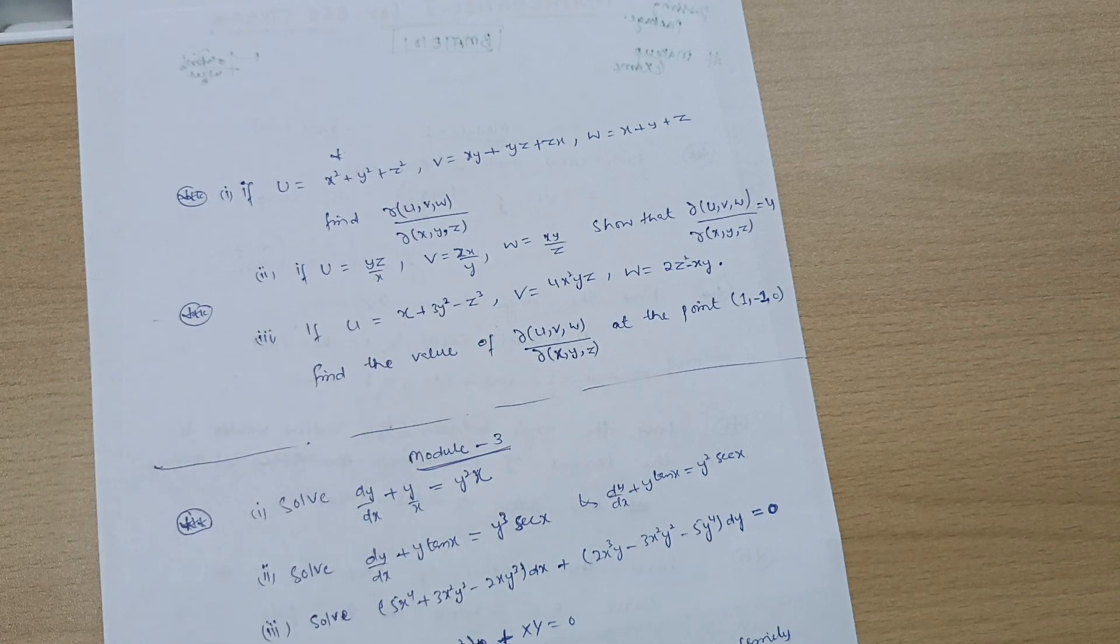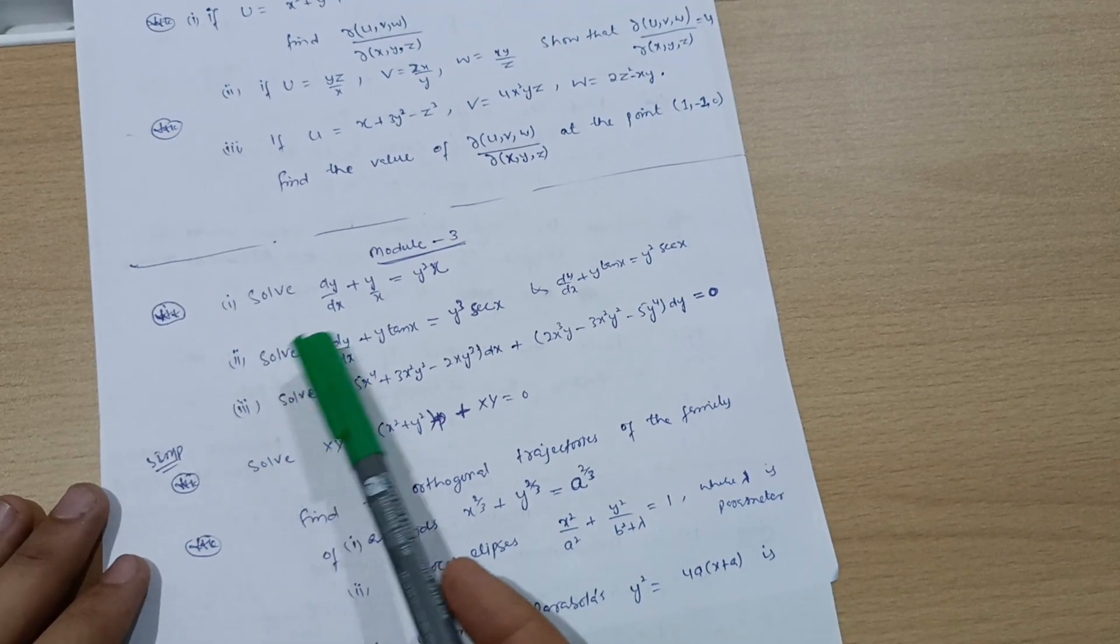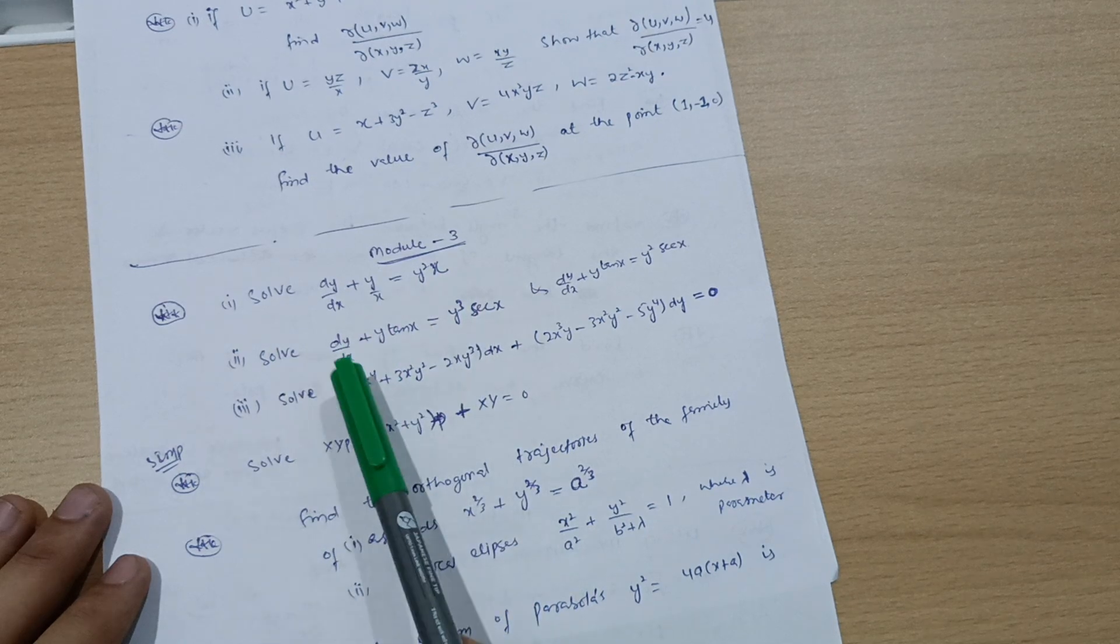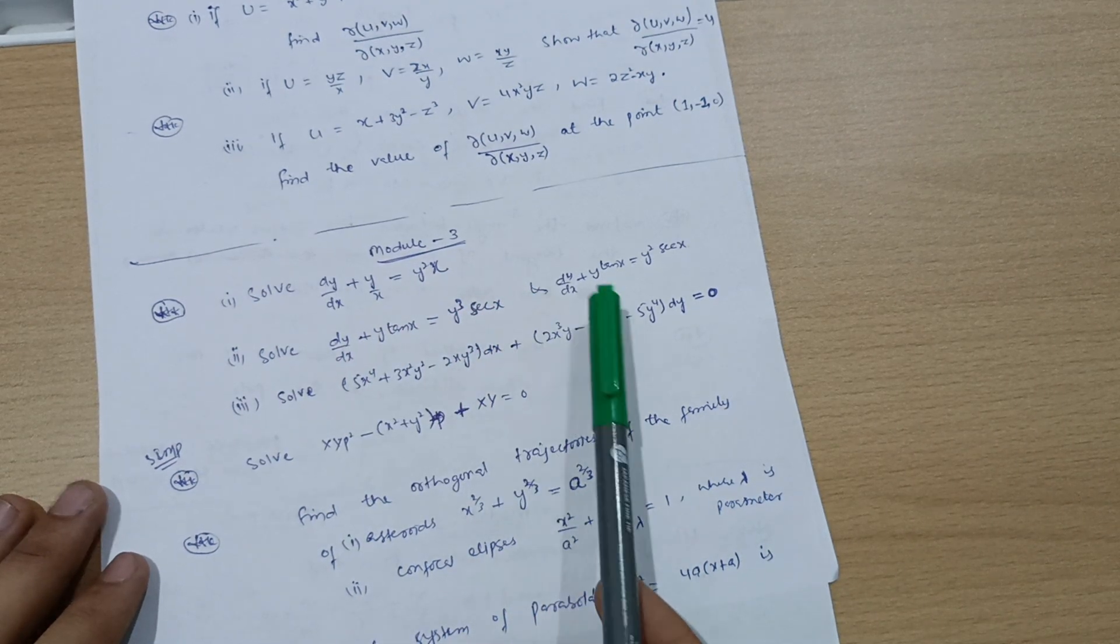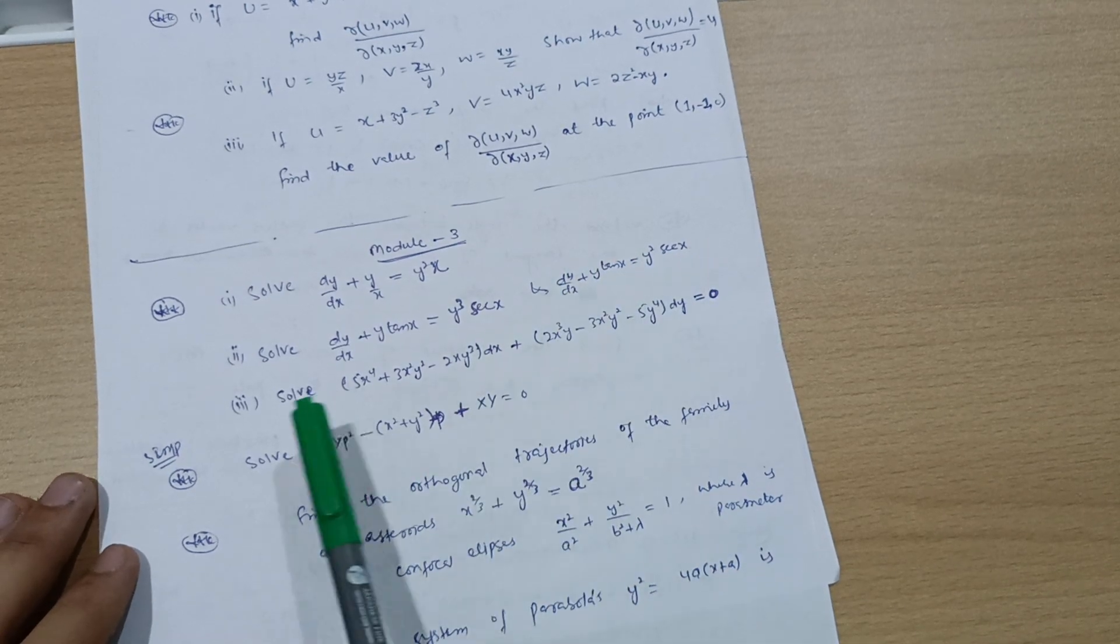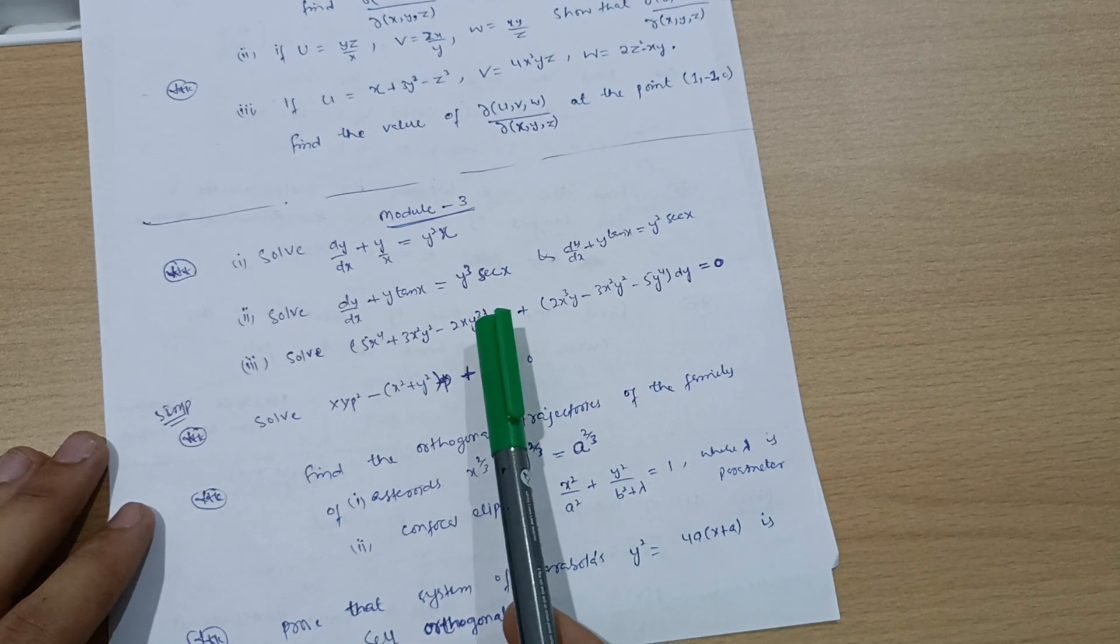Next is Module 3 where you have to solve some differential equations. Solve dy by dx plus y by x equals y squared by x. Solve dy by dx plus y tan x equals y cubed sec x. And dy by dx plus y tan x equals y squared sec x.